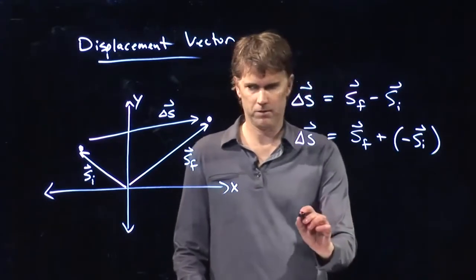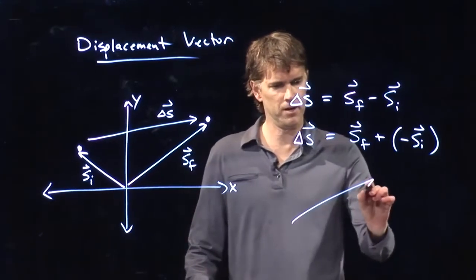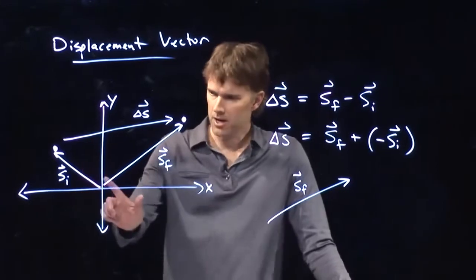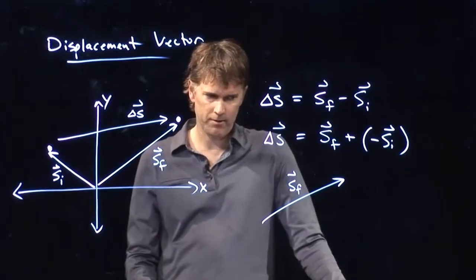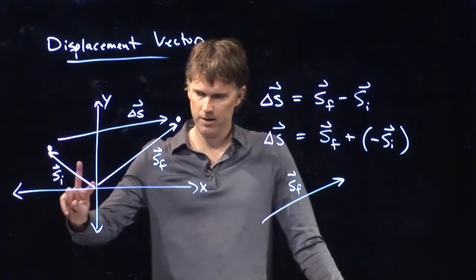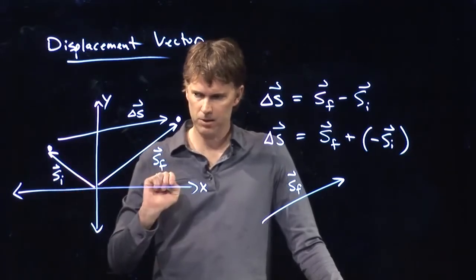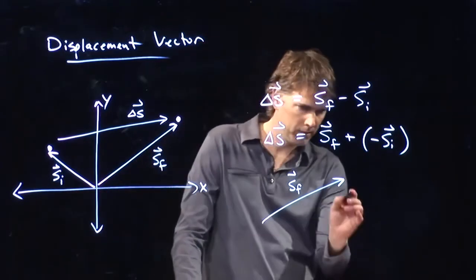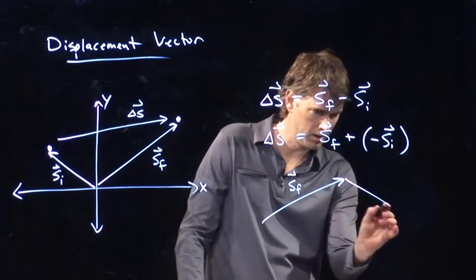Sf looks like this. Up and to the right. Si was up and to the left, which means that the negative of Si, you just flip the arrowhead. Same length, just opposite direction. So it would be down and to the right. So it would be something like that.